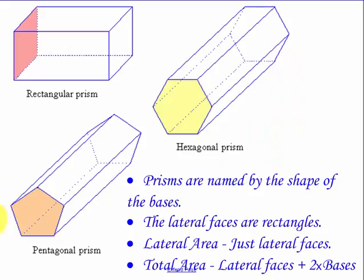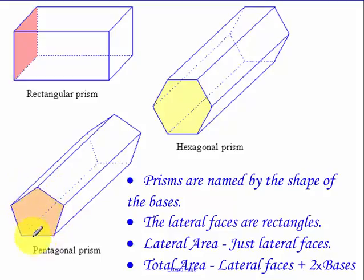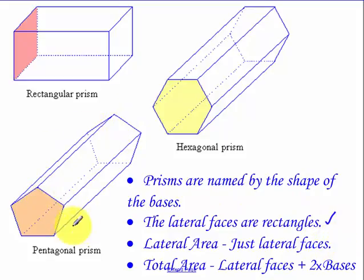Prisms are named by the shape of their bases. So if we have a hexagon as the base, it's a hexagonal prism. If you have a pentagon, it's a pentagonal prism. In a right prism, the lateral faces are all rectangles. Lateral area is just the area of each one of the rectangles combined. The total area is the lateral area plus twice the base area.